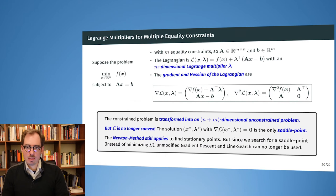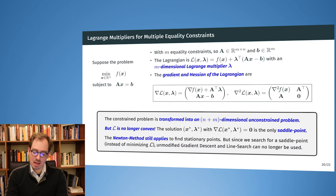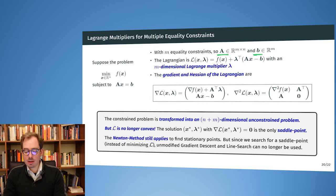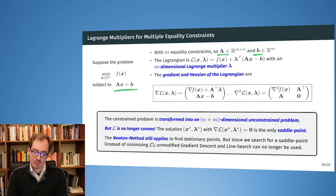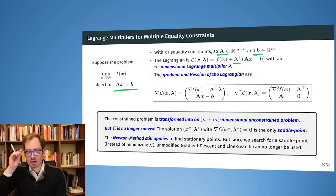Let's generalize the example to higher dimensions. Imagine we don't have only one equality constraint but several equality constraints. We have matrix A and B such that Ax equals B. We can still work with the Lagrangian, but now our vector lambda has higher dimensionality — we have an M-dimensional Lagrange multiplier if we have M equality constraints.